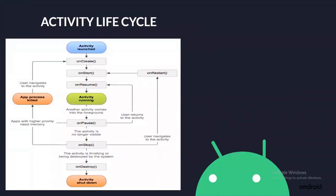Coming to the Activity Life Cycle concept. To navigate transitions between stages of the Activity Life Cycle, the Activity class provides a core set of 6 callbacks: OnCreate, OnStart, OnResume, OnPause, OnStop, and OnDestroy method. The system invokes each of these callbacks as an Activity enters a new state.